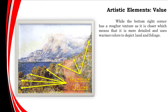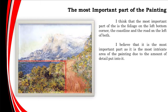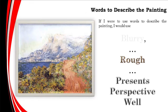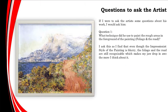While the bottom right corner has a rougher texture as it is closer, using warmer colors to depict land and foliage. I think the most important part of the painting is the foliage on the left bottom corner as it is the most intricate area due to the amount of detail put into it. If I were to use words to describe the painting, I would use blurry, rough, and presents perspective well. If I were to ask the artist some questions, I would ask him what technique did he use to paint the rough areas in the foreground?